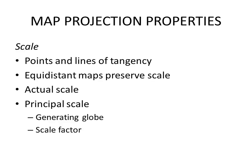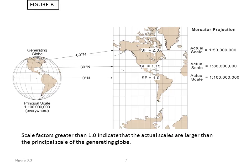As we look at this through examples, we'll see that these factors, such as tangency, equidistance, actual versus principal scale, affect the way that maps appear and affect appropriate use.